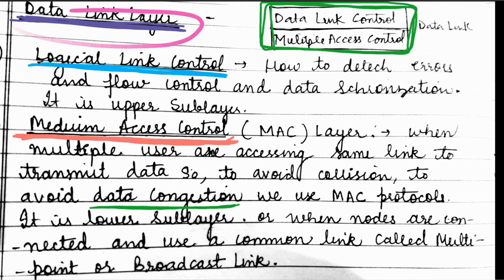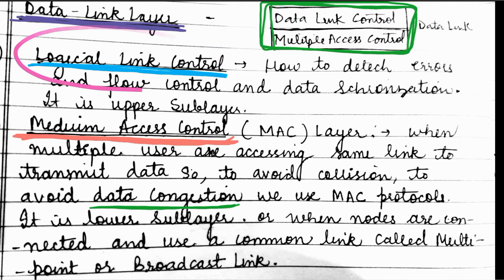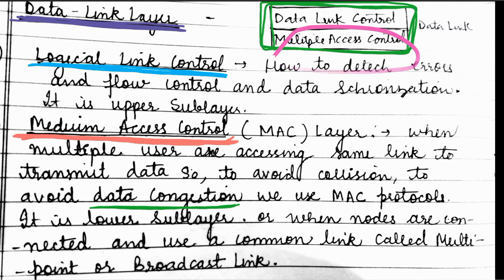In the data link layer, there are also sub-layers with specific protocols and particular work. In the data link layer, there are two layers — one is the topmost layer and one is a sub-layer. The first is the logical link control layer, which is the uppermost layer. The second layer is the medium access control layer.